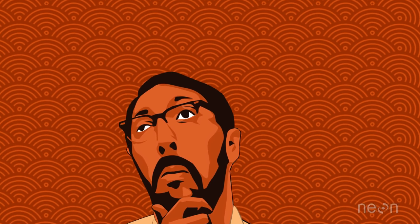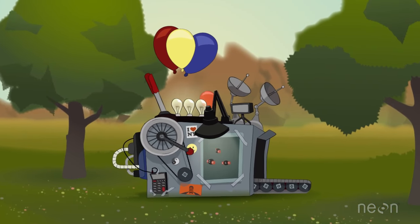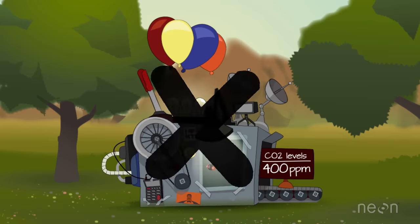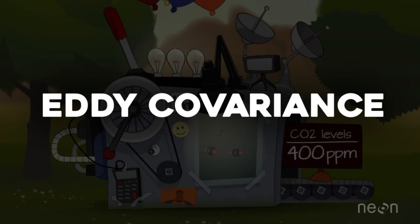Have you ever wondered how scientists measure CO2 and greenhouse emissions from local ecosystems here on Earth? Well, one way is a well-defined scientific method known as eddy covariance.